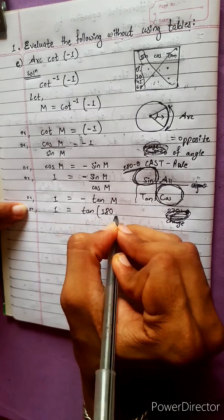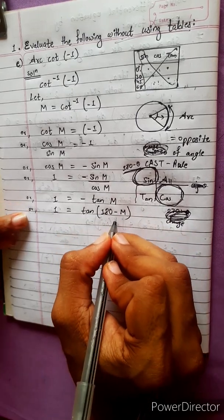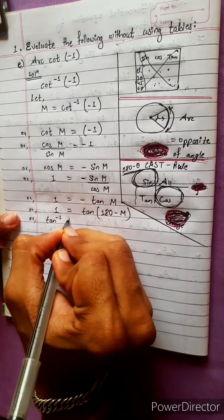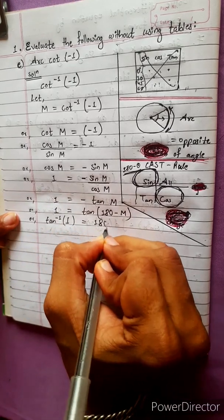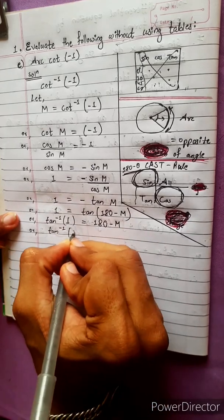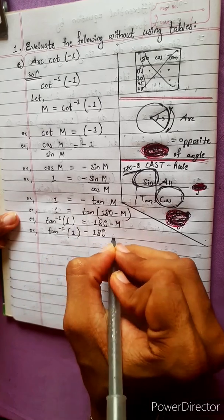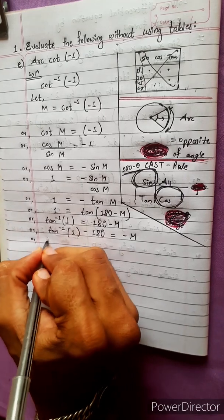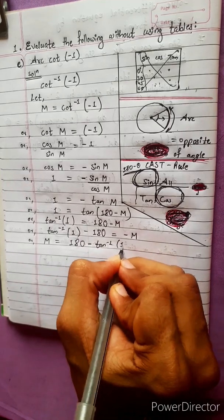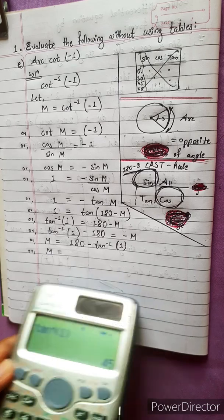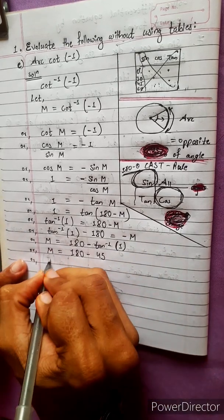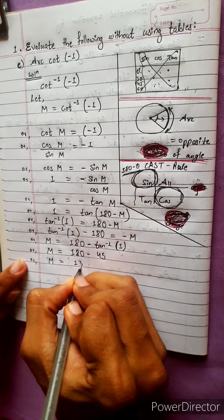At 180°, we apply: tan inverse of 1 equals 45°. Therefore m equals 180 minus tan inverse 1, which gives m equals 180 minus 45, so m equals 135°.